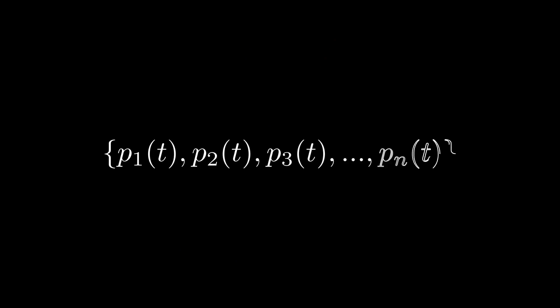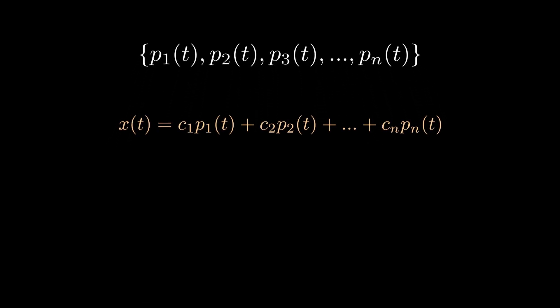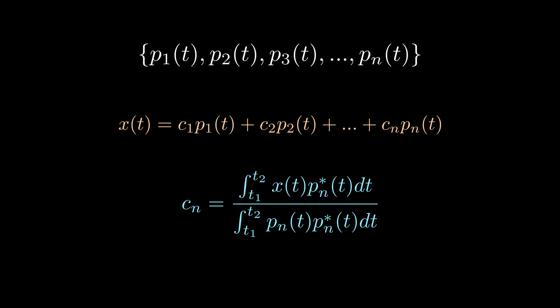If an orthogonal set is complete, meaning that no other functions exist outside the set that satisfy the orthogonality condition, then any arbitrary function x(t) can be expressed as a sum or linear combination of that orthogonal signal set's elements. As in vector space, each coefficient is the dot product of the signal itself and the signal set element divided by the norm of the signal.